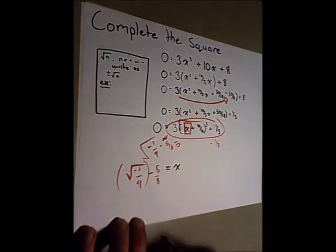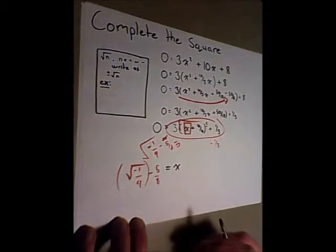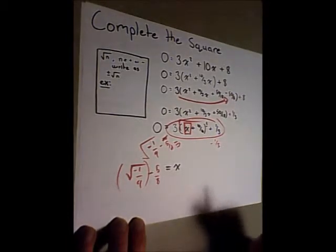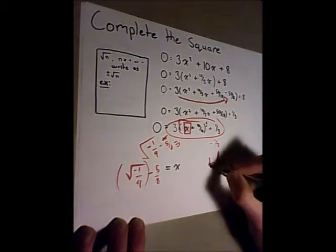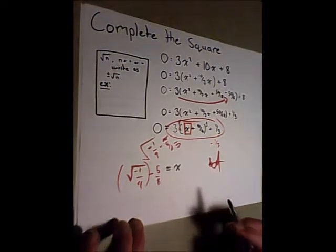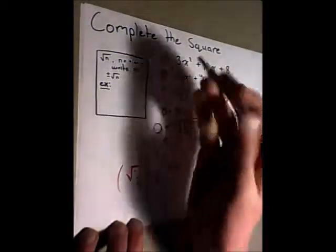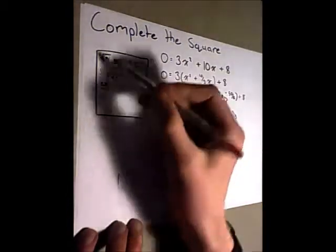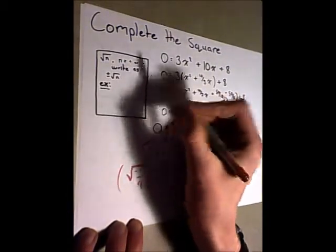But if we were to plug this in, this would only give us one x-value, which is a problem because we know from factoring that there's two x-values because the graph looks like this and there's two x-intercepts. But if we look at how we can calculate the square of something, as you can see here, the square root of n can be positive or negative.